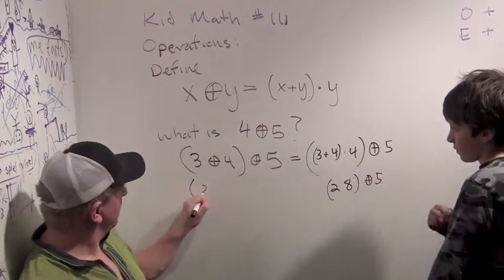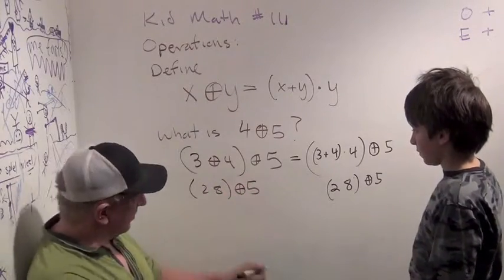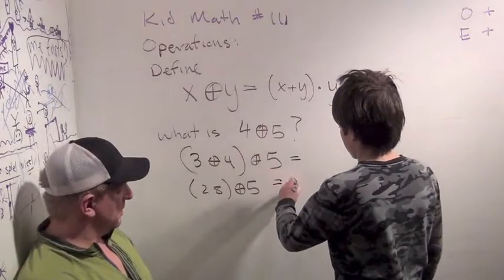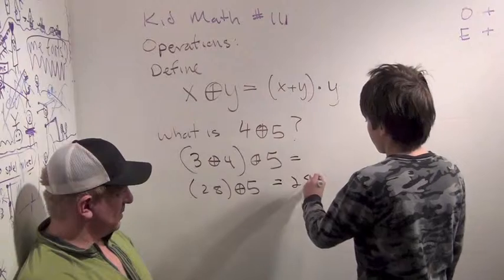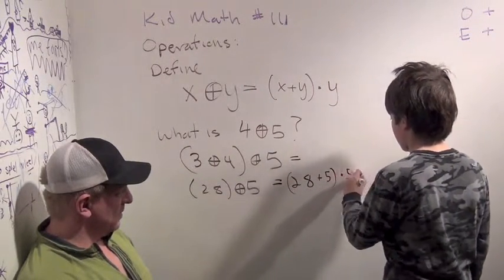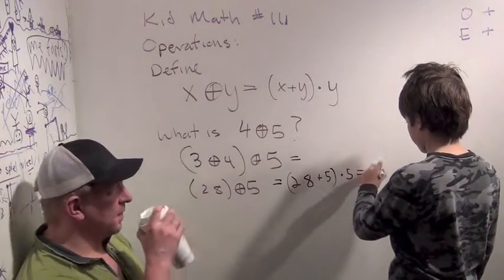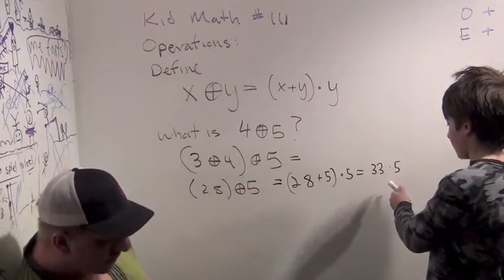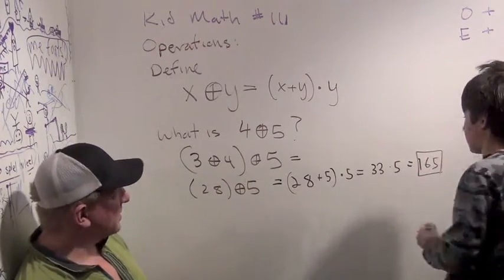Okay. So let me write that here, 28 to leave you some room, circle plus 5. So this means 28 plus 5 times 5, which is 33 times 5, which would be 150 plus 15, which is 165. Good job. Good job. And that's exactly the way to do it.